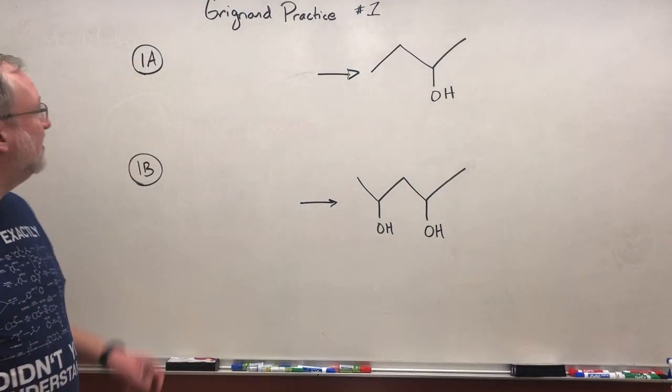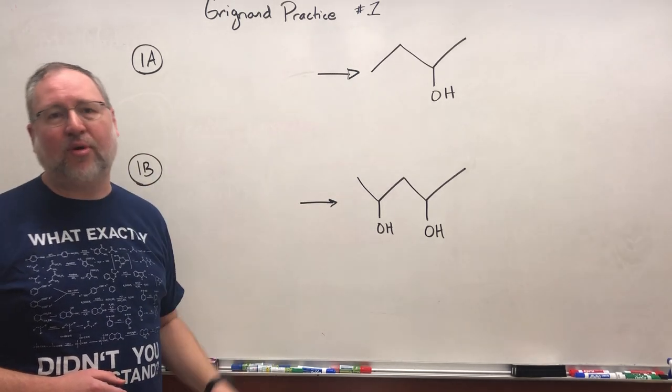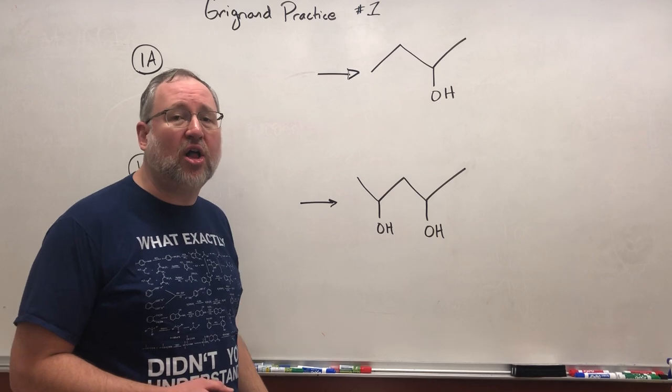In this first one I have two examples. Let's start with 1A. In 1A I've shown you the product. The product is 2-butanol.